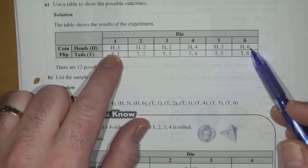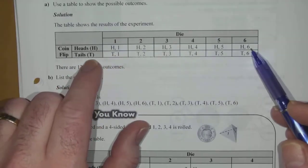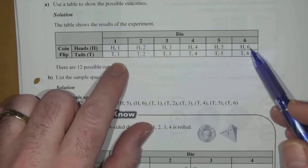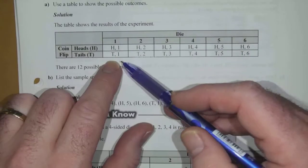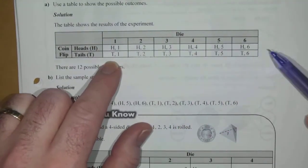Now, the other scenario, you could flip a tails. So, the bottom row is all about tails. And then this column again is ones, twos, three, four, five, and six.